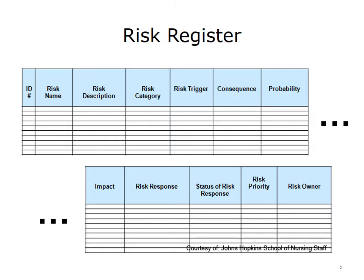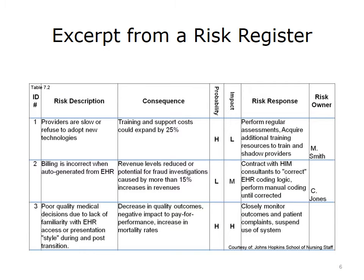You will document and track your identified risks in a risk register. Some of the categories in a typical risk register might include description, category, trigger, consequence, and probability. A key category is the risk owner — the person assigned to monitor that particular risk and implement the risk response strategy. This example shows some typical entries that you would find in a risk register.